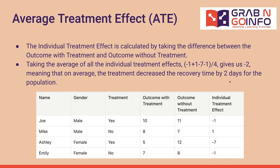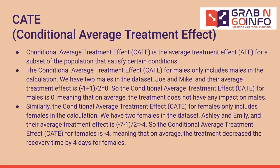Conditional Average Treatment Effect is the average treatment effect for a subset of the population that satisfies certain conditions. The conditional average treatment effect for males only includes males in the calculation. We have two males in the dataset, Joe and Mike, and their average treatment effect is zero. So the conditional average treatment effect for males is zero, meaning that on average, the treatment does not have any impact on males.